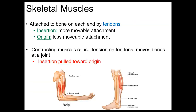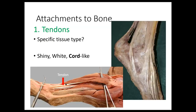Each muscle only does one particular movement — it always pulls in one direction. Muscles can pull; they never push. That's why you have sets of muscles. For example, the biceps brachii flexes the arm, and then you need a different muscle to extend the arm — that would be the triceps brachii. They each move in only one single direction.